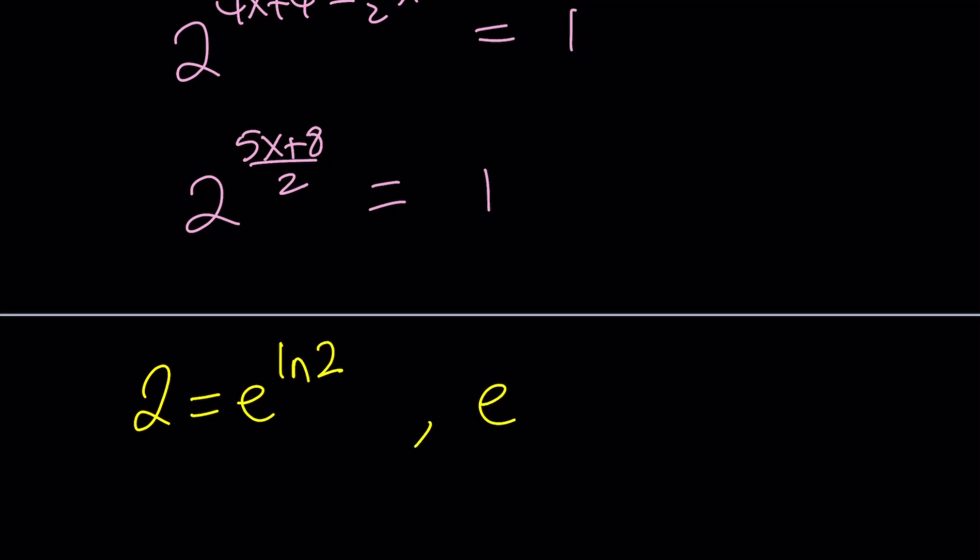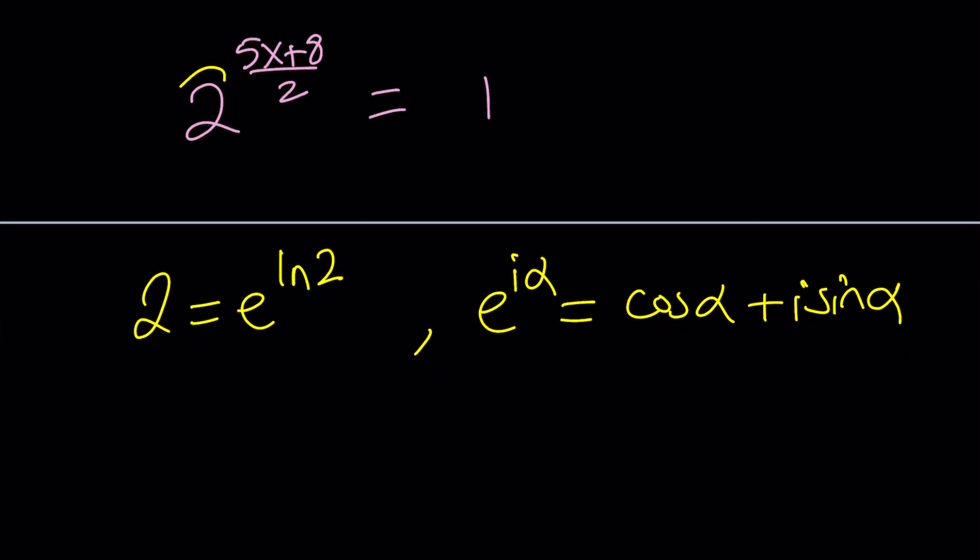It is e to the power i alpha is cosine alpha plus i sine alpha. So any complex number pretty much can be written like that. So replace 2 with that.